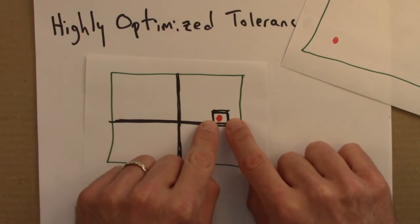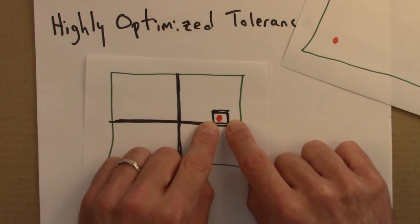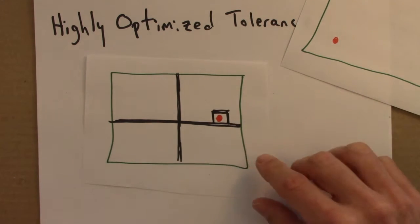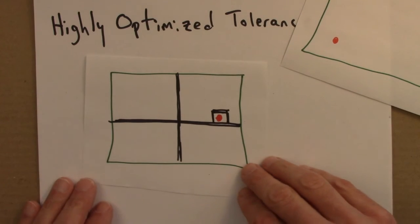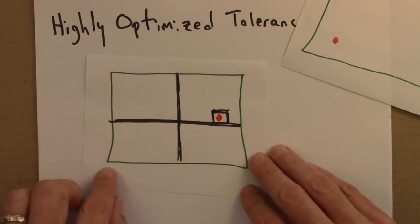If we could, we would just put little fire breaks right around every little lightning strike.